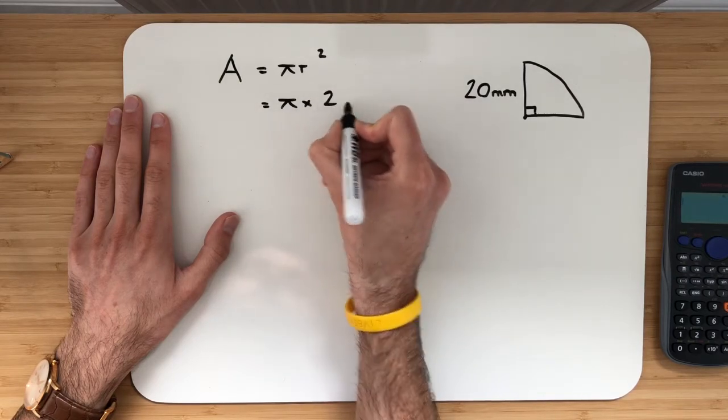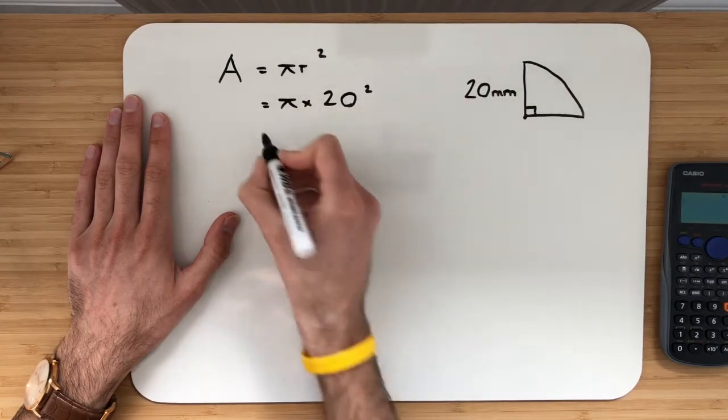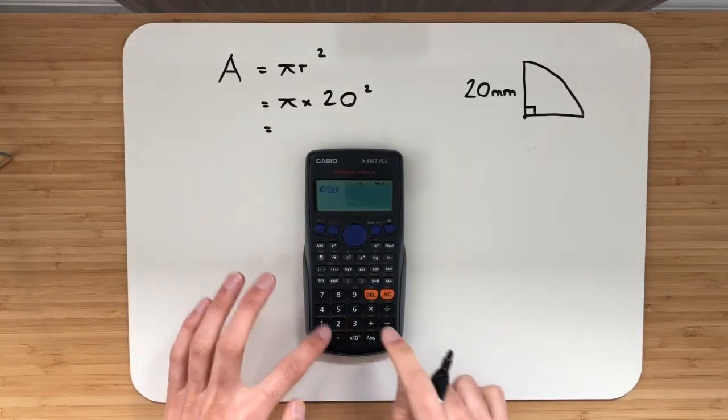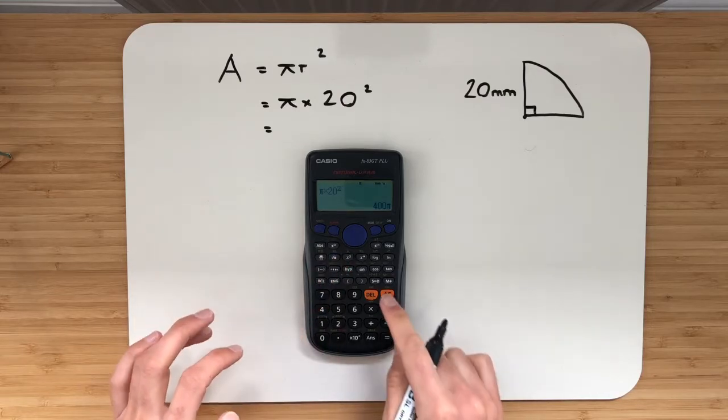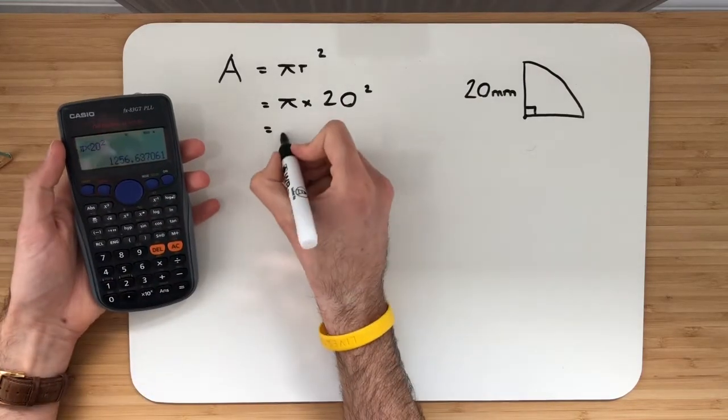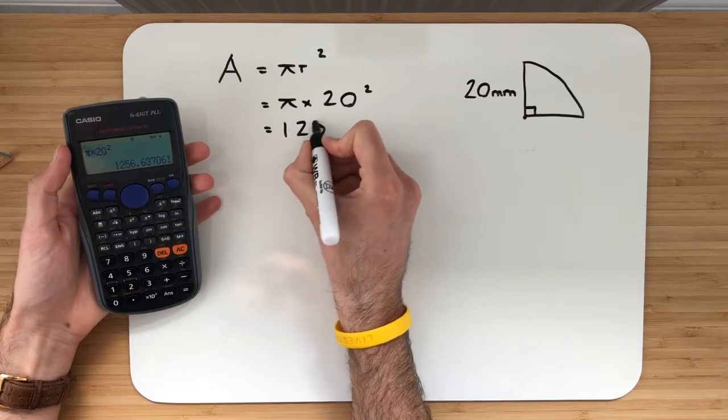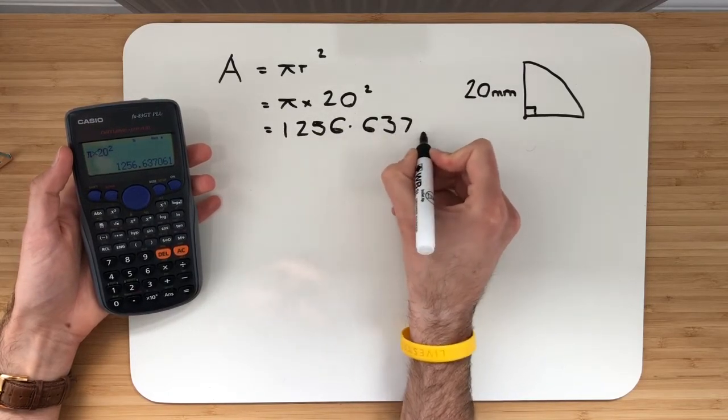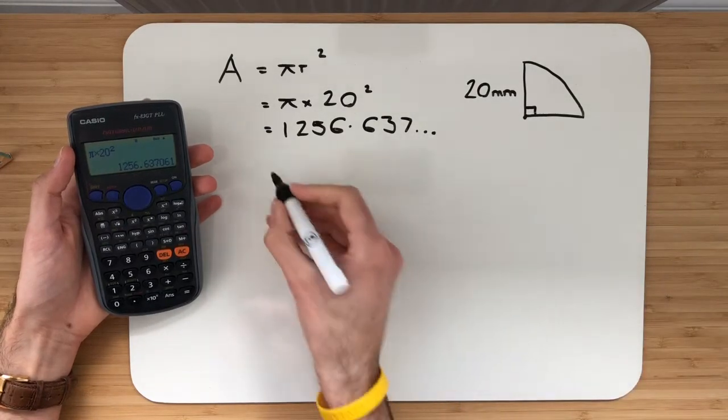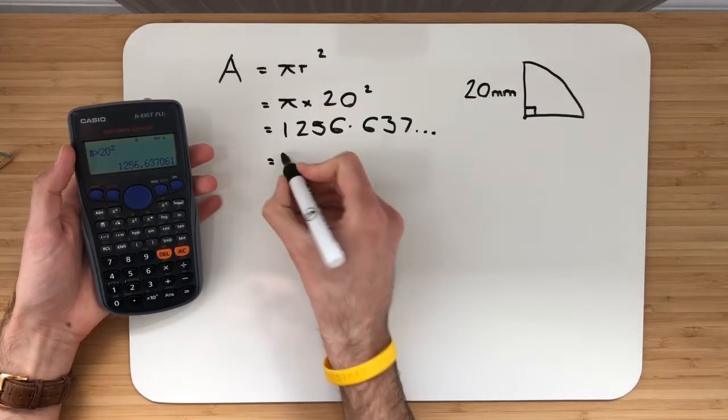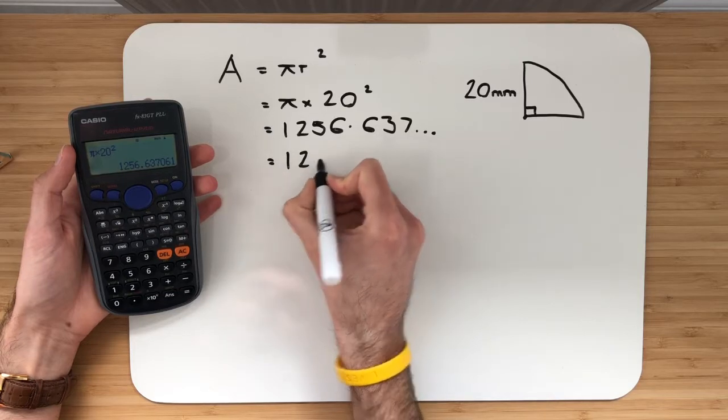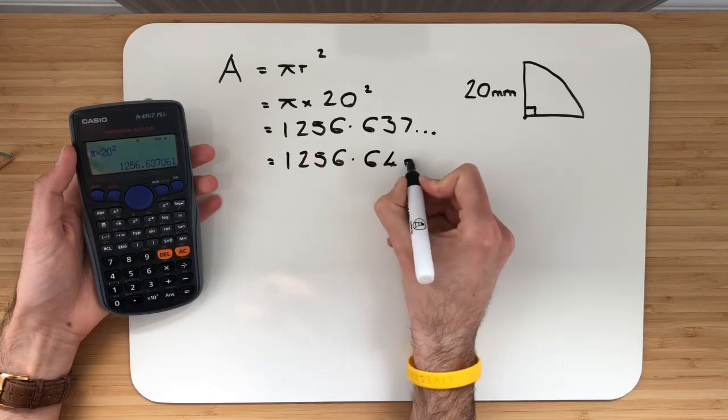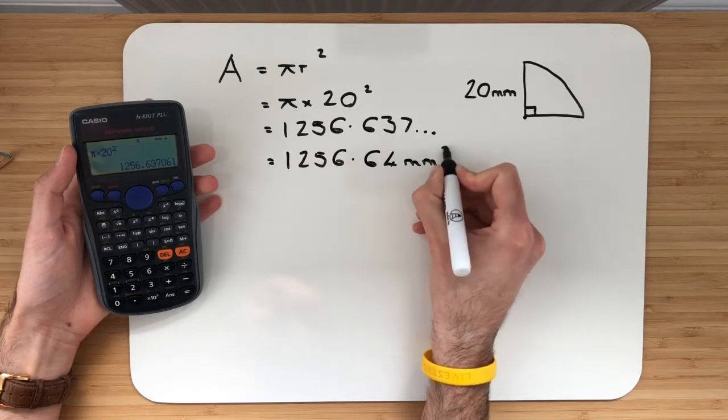Pi multiplied by 20 squared. Take our calculator and let's substitute in. Pi multiplied by 20 squared. As a decimal that's going to be 1,256.637 continues on. Let's just round that to our two decimal places. So that will be 1,256.64 square millimetres.